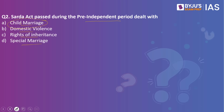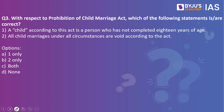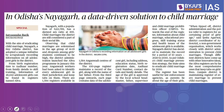Next question: with respect to the Prohibition of Child Marriage Act, which statements are correct? Statement one: a child according to this act is a person who has not completed 18 years of age. Statement two: all child marriages under all circumstances are void according to the act. The answer is none — both statements are wrong. Why? Because of the reference to child marriage in today's news.